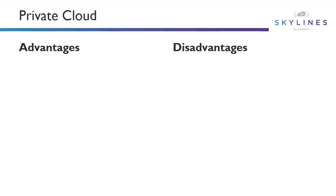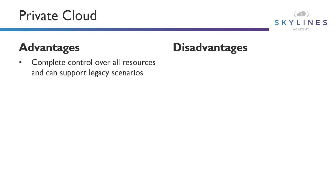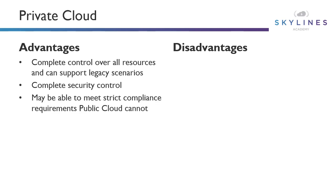The advantages of private cloud are: you have complete control over all resources, and you can support legacy scenarios that you're already supporting today in your data center — importing those workloads into your private cloud to provide self-service and automation capabilities. You have complete security control over every network device and who has access to the data center where workloads run. That really helps you meet strict compliance requirements that perhaps public cloud cannot meet.